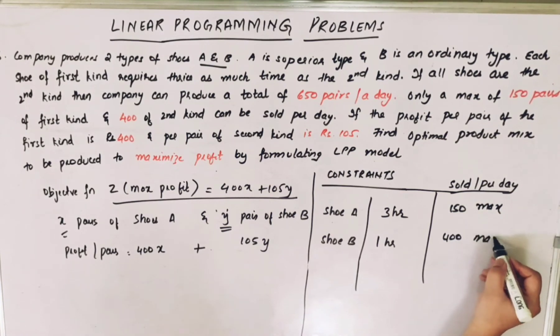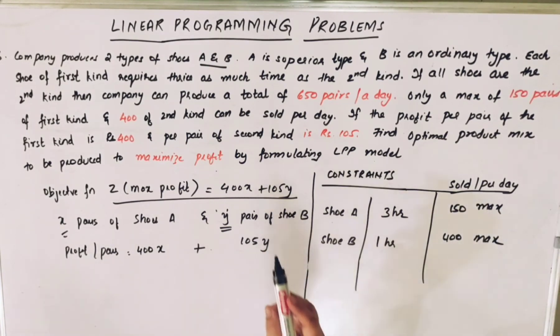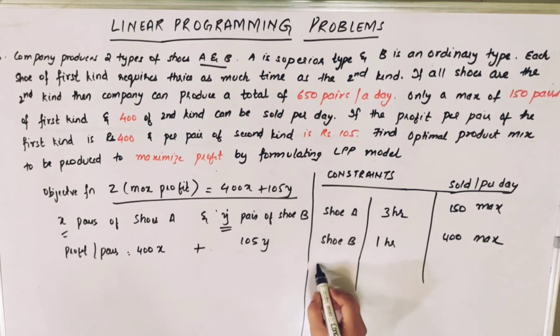And what's the total number of shoes that can be produced per day? Total shoe A and shoe B, if you add together, only 650 per day.